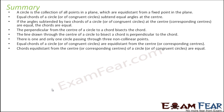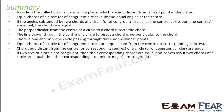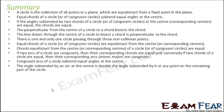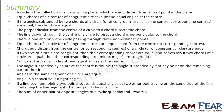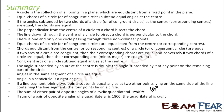Chords equidistant from the center are equal. If two circles are congruent, their corresponding chords are equal, and conversely, equal chords have congruent corresponding arcs. Congruent arcs subtend equal angles at the center. The angle subtended by an arc at the center is double the angle subtended at any other point on the circle. Angles in the same segment are equal. The angle in a semicircle is a right angle. If a line joining two points subtends equal angles at two other points on the same side, all four points lie on a circle. The sum of opposite angles of a cyclic quadrilateral is 180 degrees, and the converse is also true.